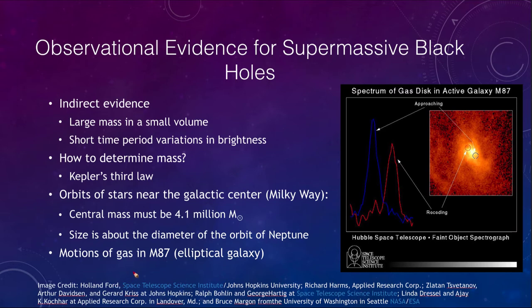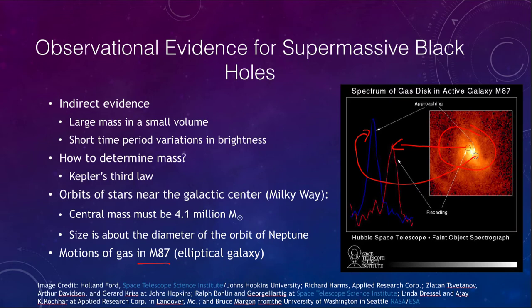This is the elliptical galaxy known as M87. We can look at the gases very close to the center. If we take a spectrum on one side, we get a red peak — it is redshifted. On the other side, it is blueshifted. That means it is rotating very rapidly, swirling around that central object. Using those motions, we can determine the mass and find it is a supermassive black hole, much larger than the 4.1 million solar mass black hole at the center of our galaxy.